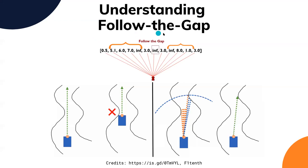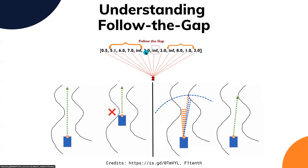For Follow the Gap: if your LiDAR point cloud looks like a continuous sequence of points, you want to find the largest gap. There's a threshold — you don't want to choose a gap too narrow for the car to pass, so there's a minimum number of points the gap should have. You iterate through all the gaps found, find the best one, and go there blindly. It's purely reactive — you constantly do this every time step and navigate.